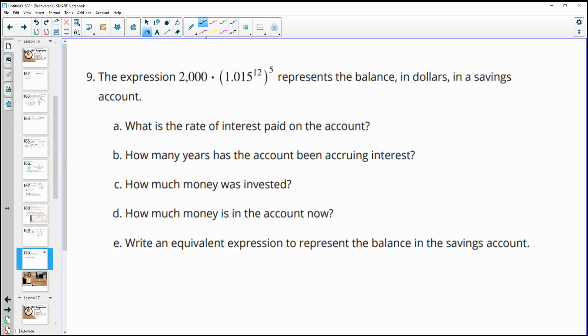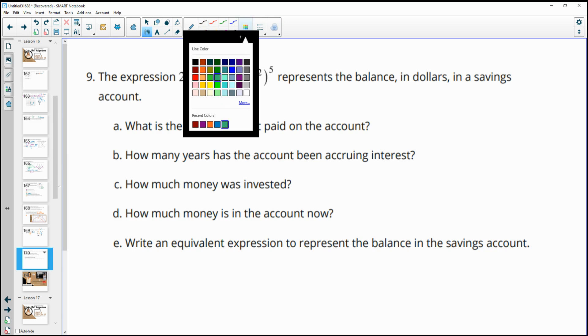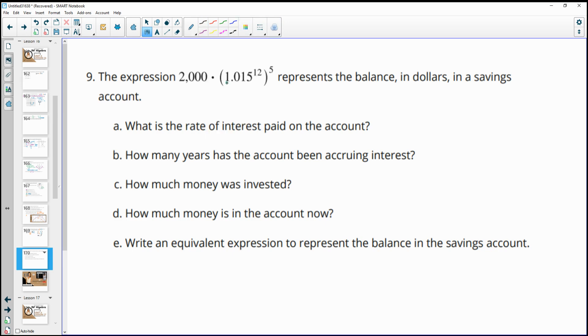Number nine, the expression 2,000 times (1.015) to the 12th to the 5th represents the balance in dollars in a savings account. What is the rate of interest being paid on this account? So remember, that's going to come from here. And this, so if we multiply this by 100,